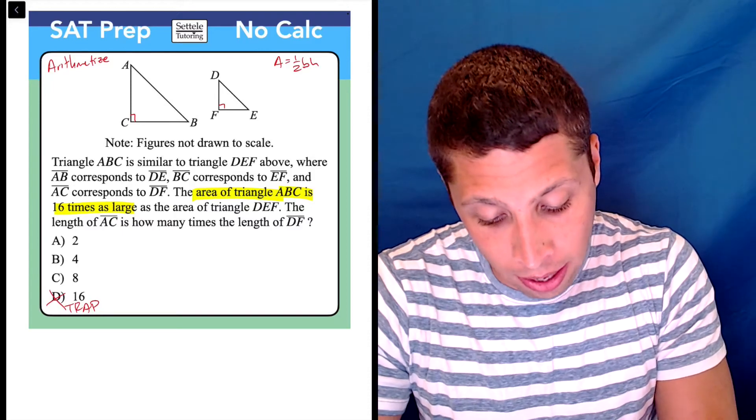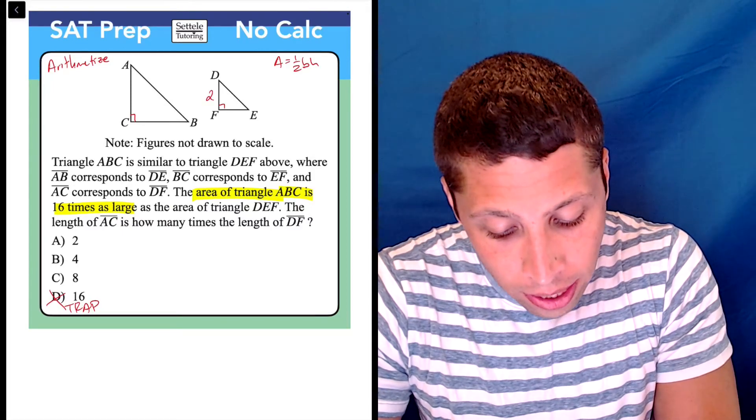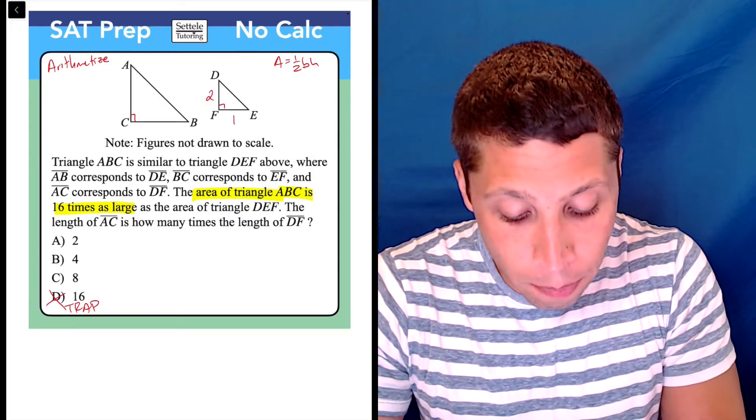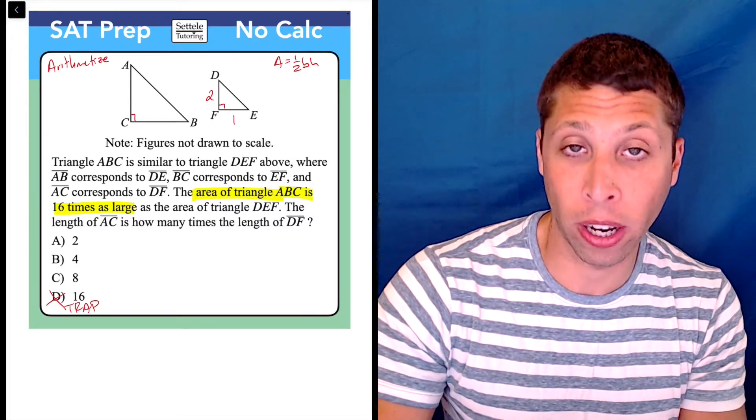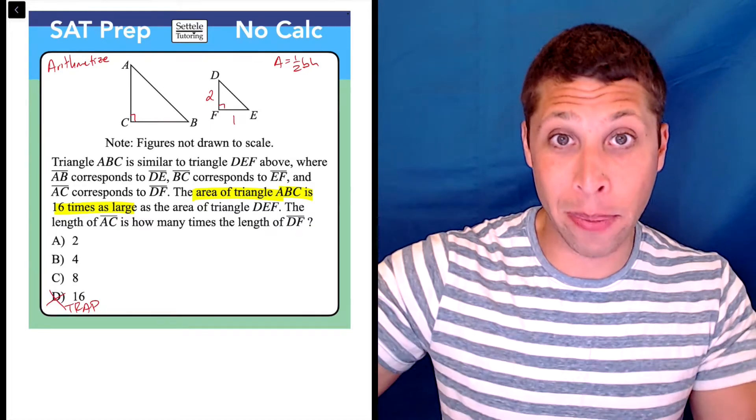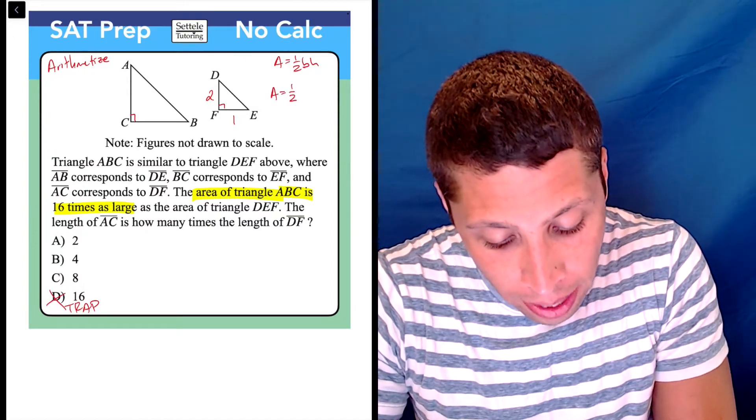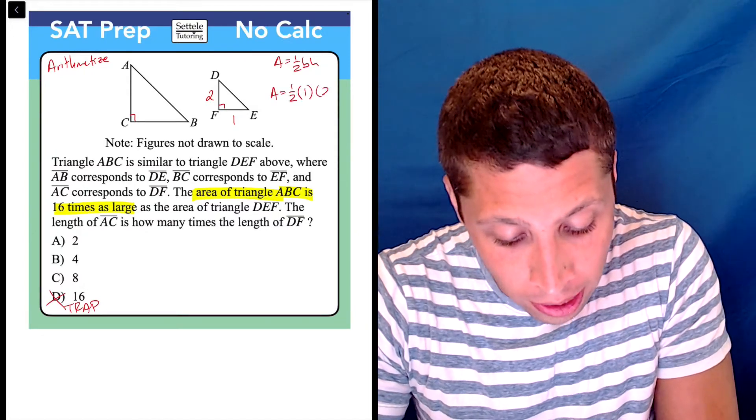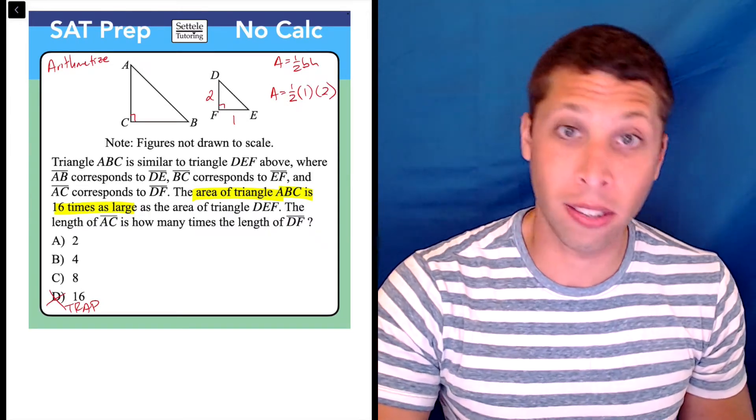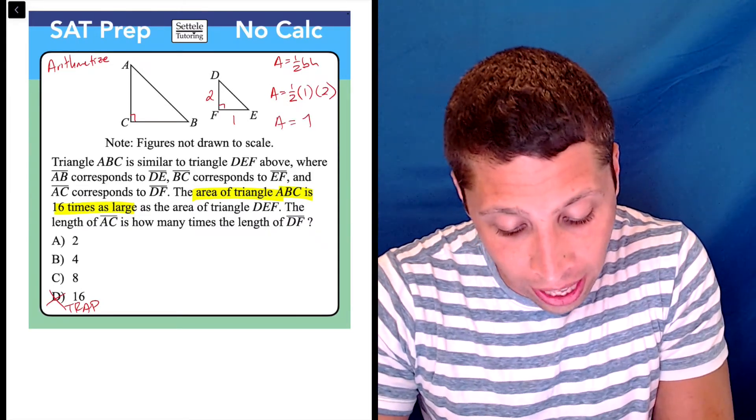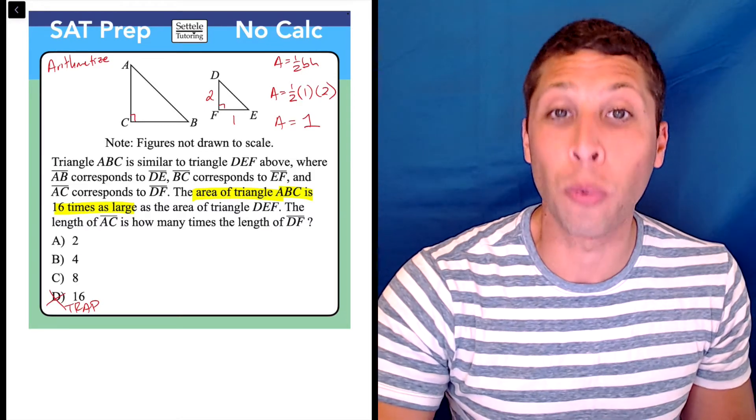Well, I'm going to say that the height is two and the base is one, and I'm working with the small triangle first because I want to make it bigger for the 16 times. So I'm doing that because if I then plug those numbers into my formula, something really convenient happens. The two cancels out with the one half, and I just get that the area of this triangle is one.